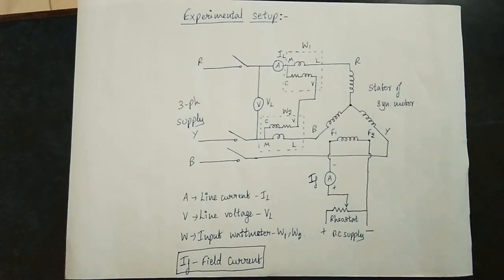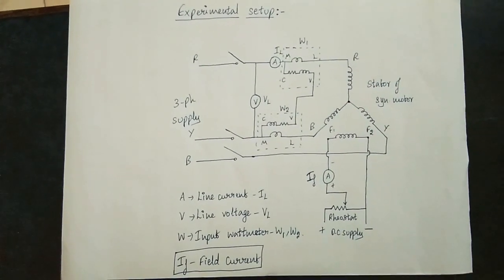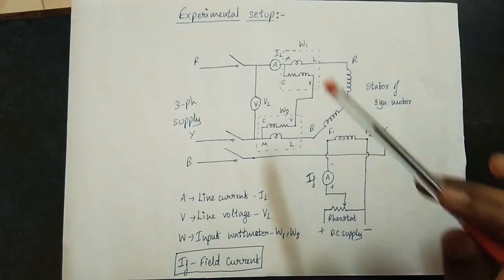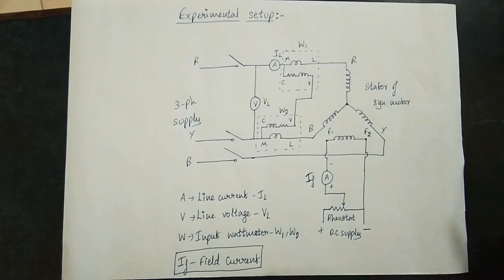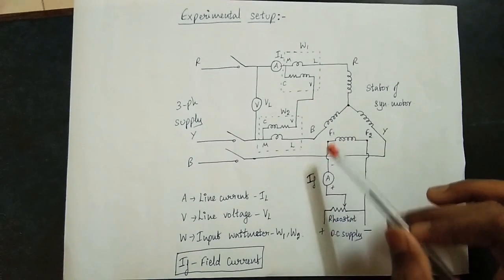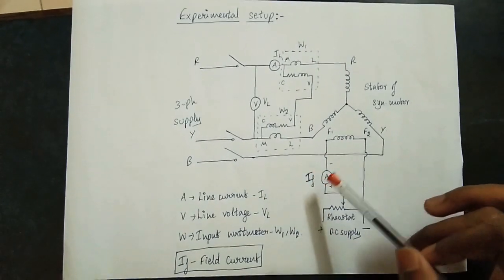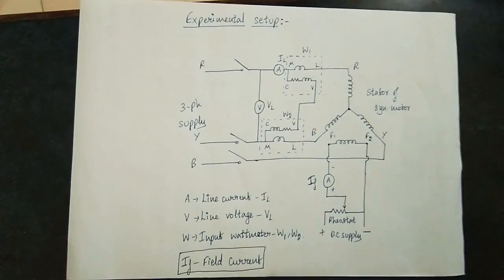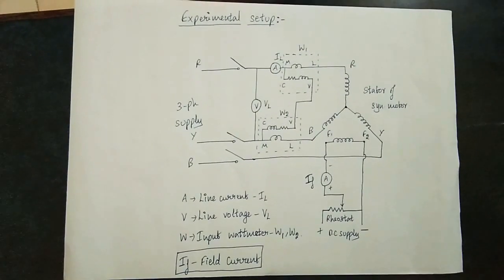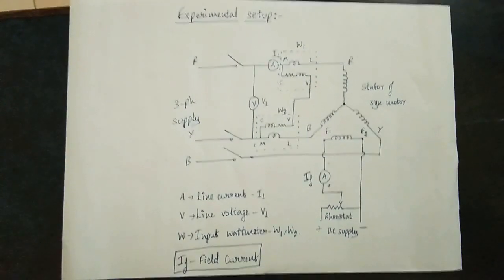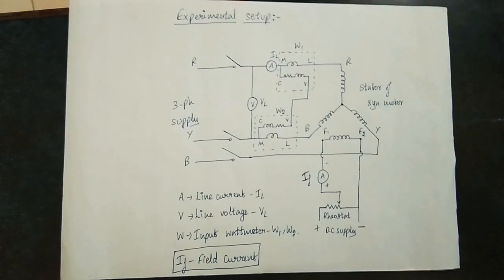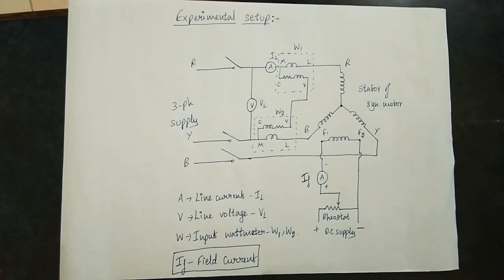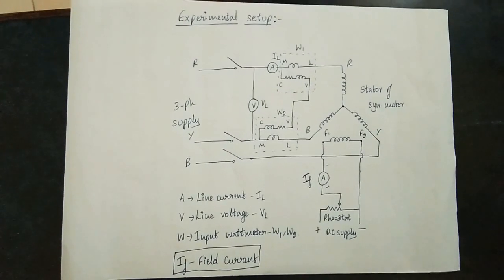This is the experimental setup. This is the motor — the armature side and the field side. The armature is the stationary part and the field terminals are F1 and F2. We measure the value of field current I_F. We use a rheostat — the rheostat is a variable resistor in the field circuit. By varying the resistance, we can increase or decrease the current. The value of the resistor is measured in ohms.